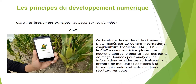Le troisième cas concerne les initiatives Digital for Agriculture menées par le Centre international d'agriculture tropicale, le CIAT. Ils ont commencé à explorer une nouvelle approche pour utiliser des données de gros volumes, pour analyser les informations et aider les agriculteurs à prendre de meilleures décisions à la ferme qui conduisent à de meilleurs résultats agricoles. Ce cas d'études est documenté. La ressource est disponible dans le répertoire partagé, accessible en ligne et téléchargeable pour participer aux discussions organisées autour des forums virtuels de l'espace de cours.